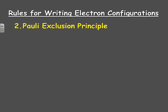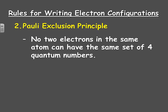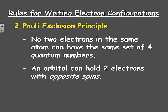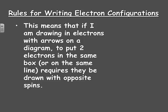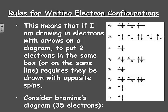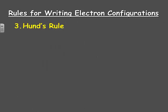Going back to our rules for writing electron configurations, the second rule is the Pauli Exclusion Principle. It says that no two electrons in the same atom can have the same set of four quantum numbers. An orbital can hold two electrons, and those electrons have to have opposite spins. So if drawing two electrons in the same orbital — represented by a box or line — they must be drawn with opposite spins. We can see this with bromine's diagram, which has 35 electrons, filling from the 1S through the 4P, where the final five electrons remain.